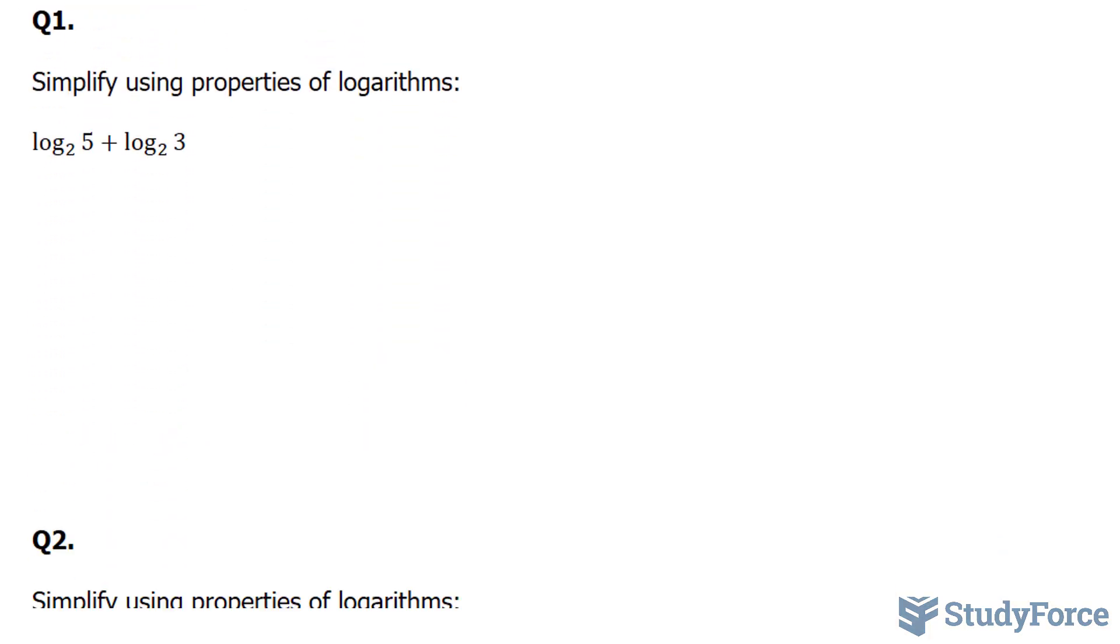Question number one reads: simplify using properties of logarithms. The question is log base 2 of 5 plus log base 2 of 3. You'll notice that these two terms are being added, and also the base is the same. Now because the base is the same, the rules will apply.